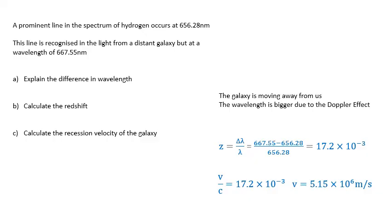The redshift: Δλ over λ. Just plug in the numbers: 17.2 times 10 to the minus 3. That is equal to v over c, so v over c is that, and that gives you a recession velocity of 5.15 times 10 to the 6 meters per second.